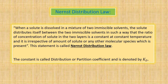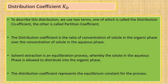I think you have understood Nernst distribution law. So next, what is distribution coefficient, or simply we denote it as KD? This distribution coefficient is described using two terms — commonly distribution coefficient and partition coefficient. It is the ratio of concentration of solute in the organic phase divided by concentration of solute in the aqueous phase, equal to the distribution coefficient KD. That is the simple definition.